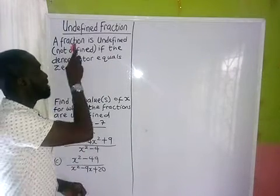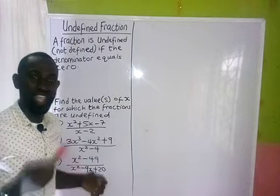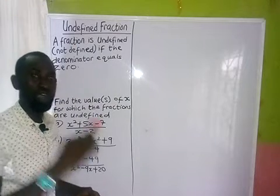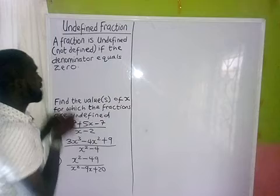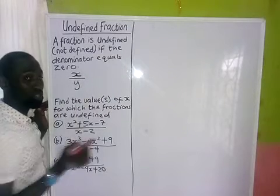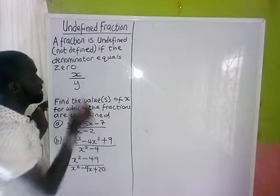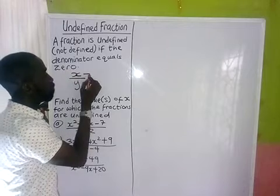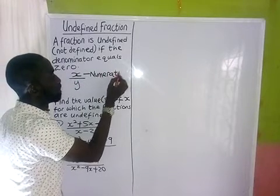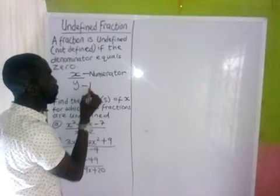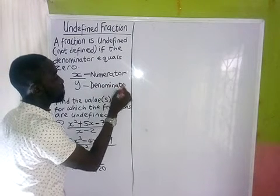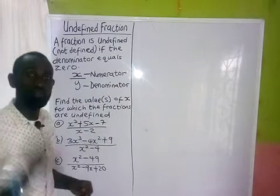So another question that will arise is: what is a fraction? A fraction is any expression of the form something over something. So if I have something like this over this, we call this expression a fraction. The one on top is what we call the numerator, and we call the one below the denominator.